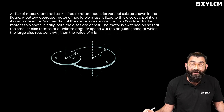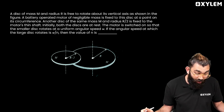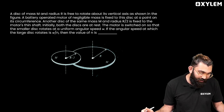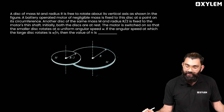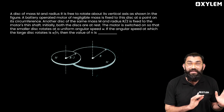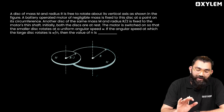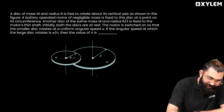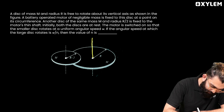Initially both discs are at rest, so the initial angular momentum of the system will be zero. The motor switch is switched on so that the smaller disc rotates at a uniform angular speed omega. If the angular speed at which the larger disc rotates is omega divided by n, then find the value of n. Since there is no external torque, angular momentum should be conserved.